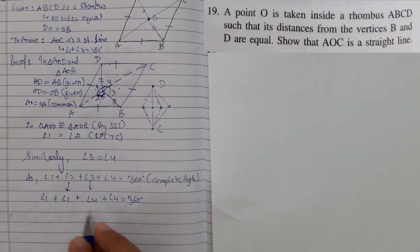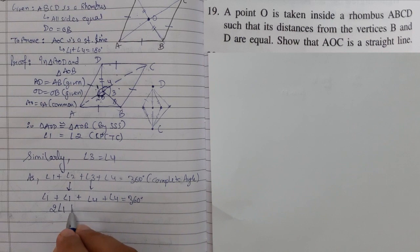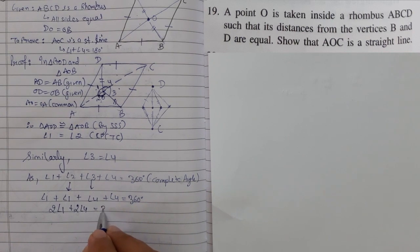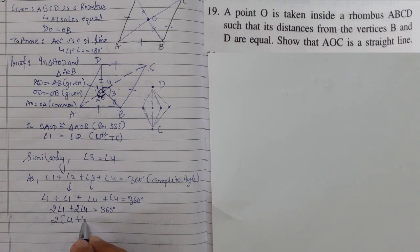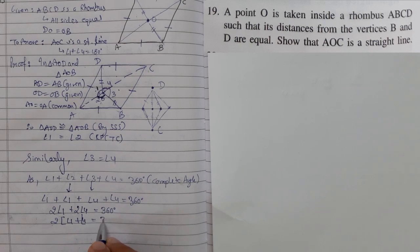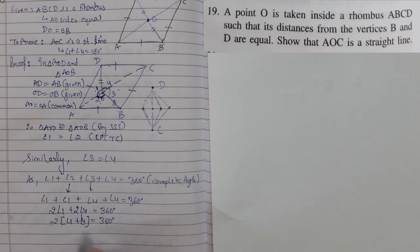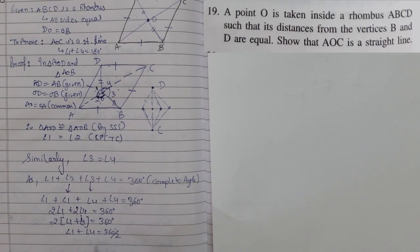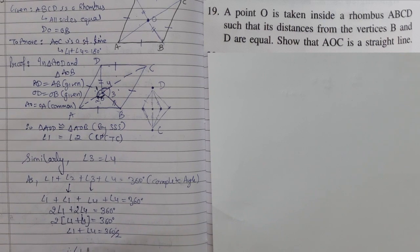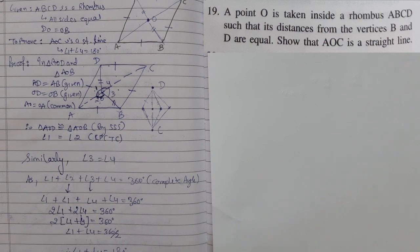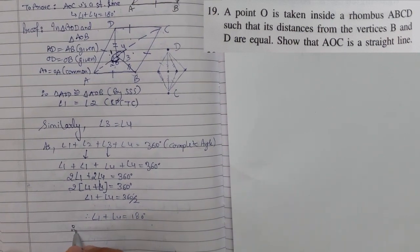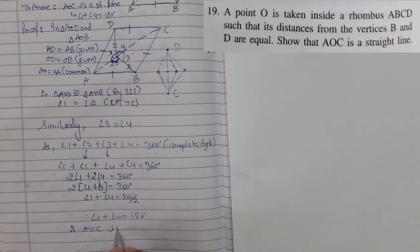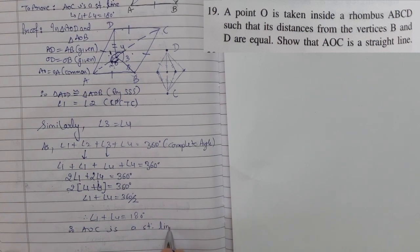And angle 4, 360 degrees. So 2 angle 1 plus 2 angle 4 equals 360 degrees. 2 goes there, angle 1 plus angle 4 equals 360 divided by 2. Therefore angle 1 plus 4 equals 180 degrees. So we can say that therefore AOC is a straight line.